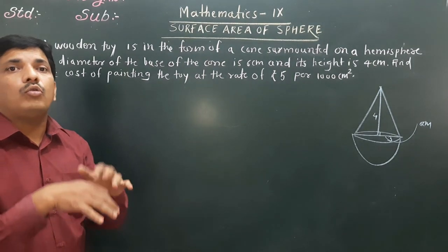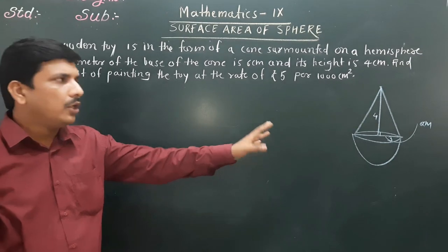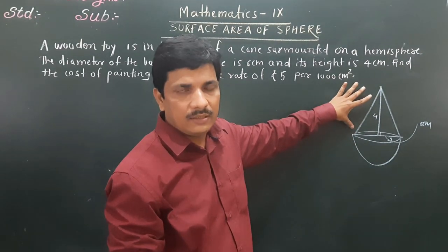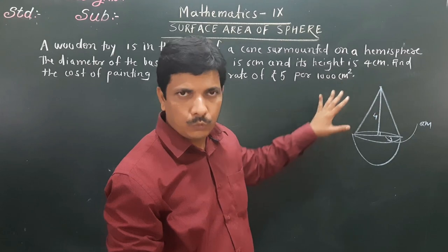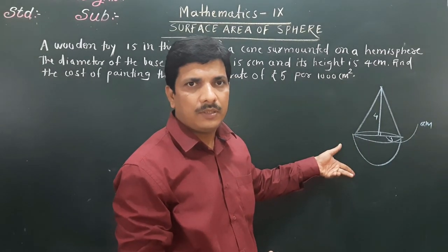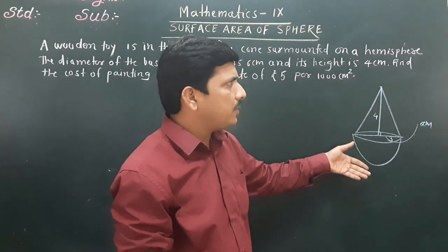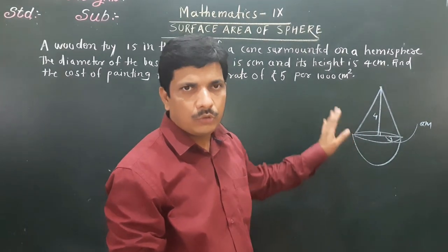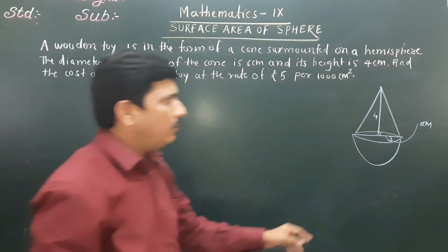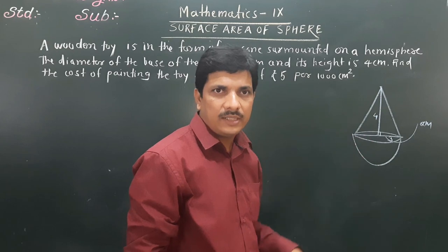We need to find the total surface area of this toy. We have to find the curved surface area of the cone plus the curved surface area of the hemisphere. First, we must find the slant height.